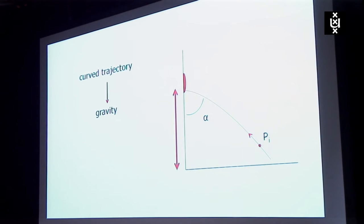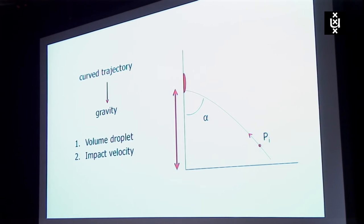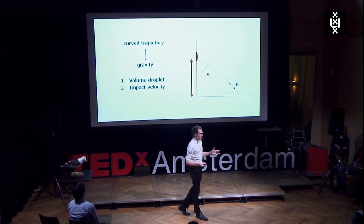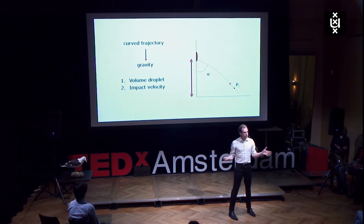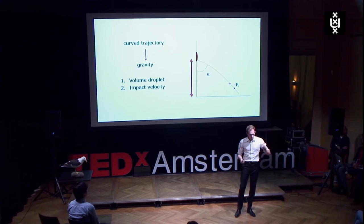What we are trying to do is take gravity into account with this calculation, because we want to determine this curved trajectory. But to do so, we need two extra parameters: namely, the volume of the droplet, and the impact velocity of those droplets. Well, the volume we can determine fairly easily. We've got a dried blood stain on a wall, we take a 3D scan of that droplet, and we get a volume back. Yes, we can determine that.